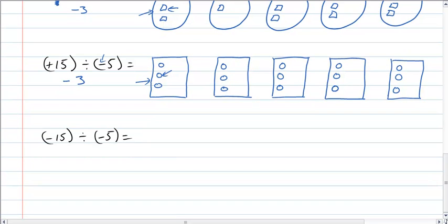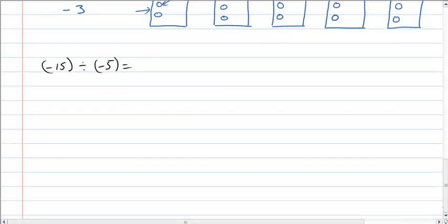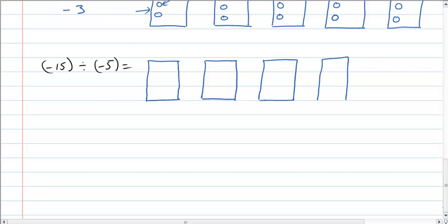Keeping on that theme, moving down. We have negative 15 divided by negative 5. So I'm going to draw 5 larger outer squares. Those represent negative 5. So there's 3, 4, 5.